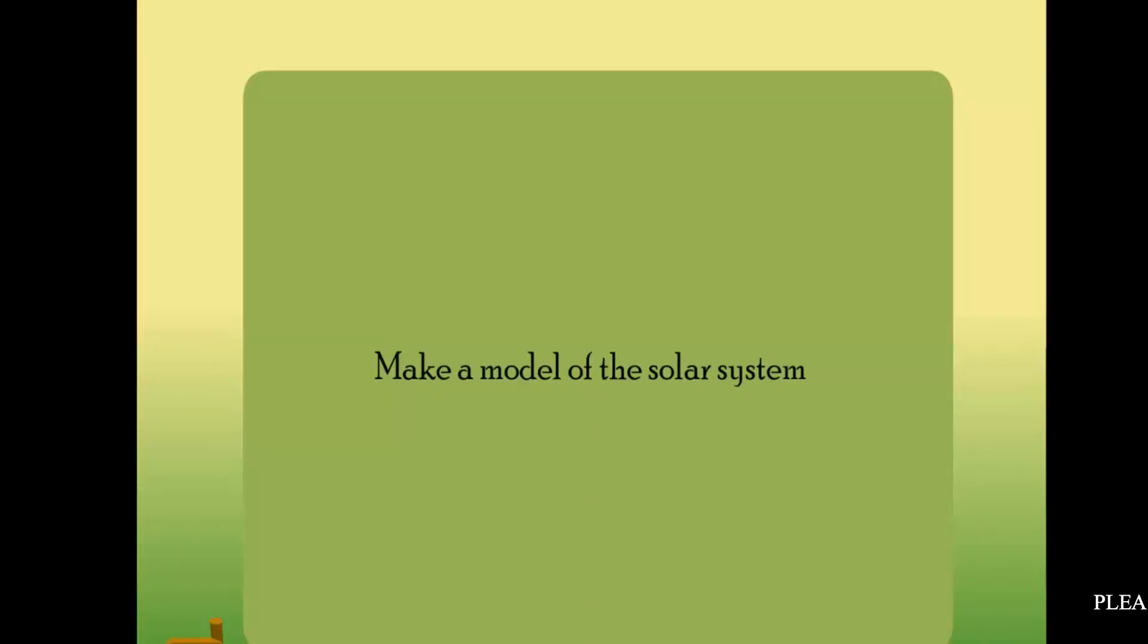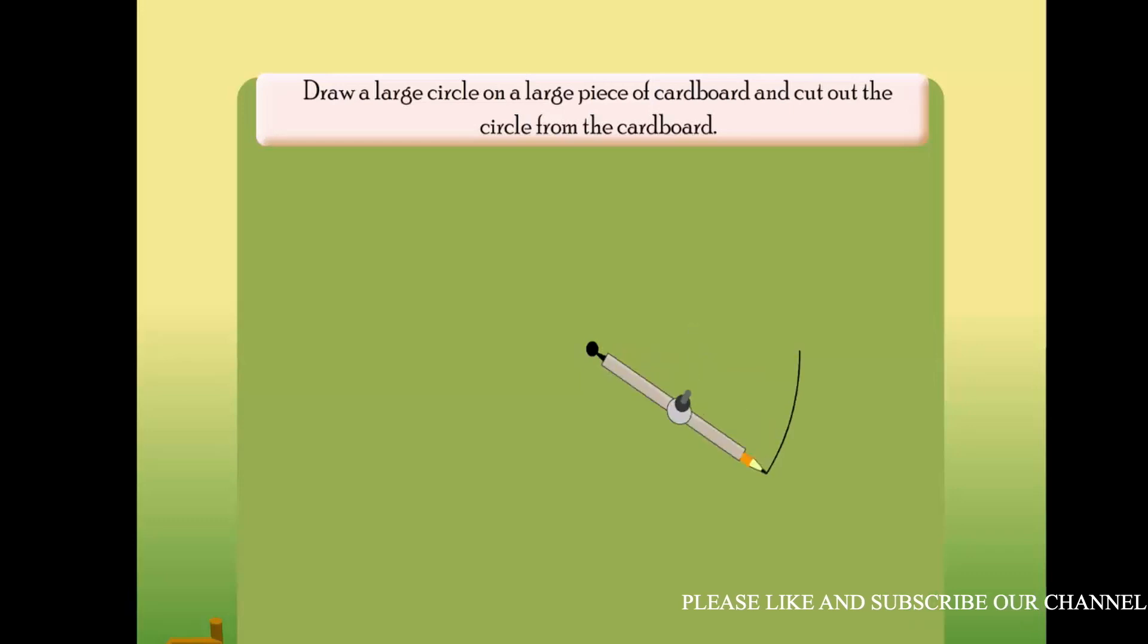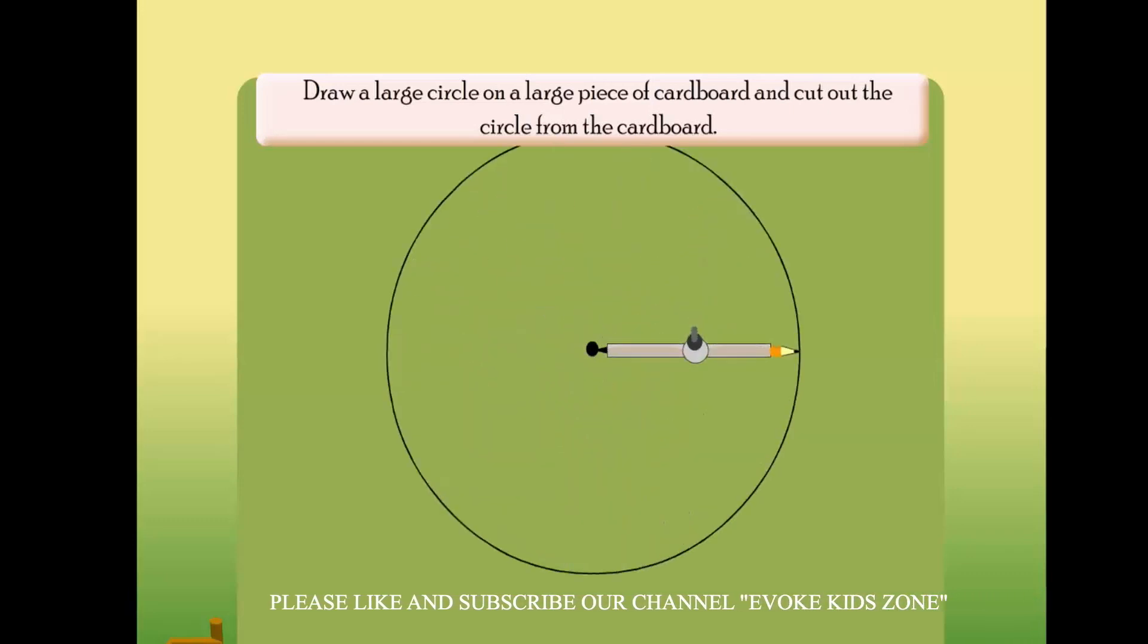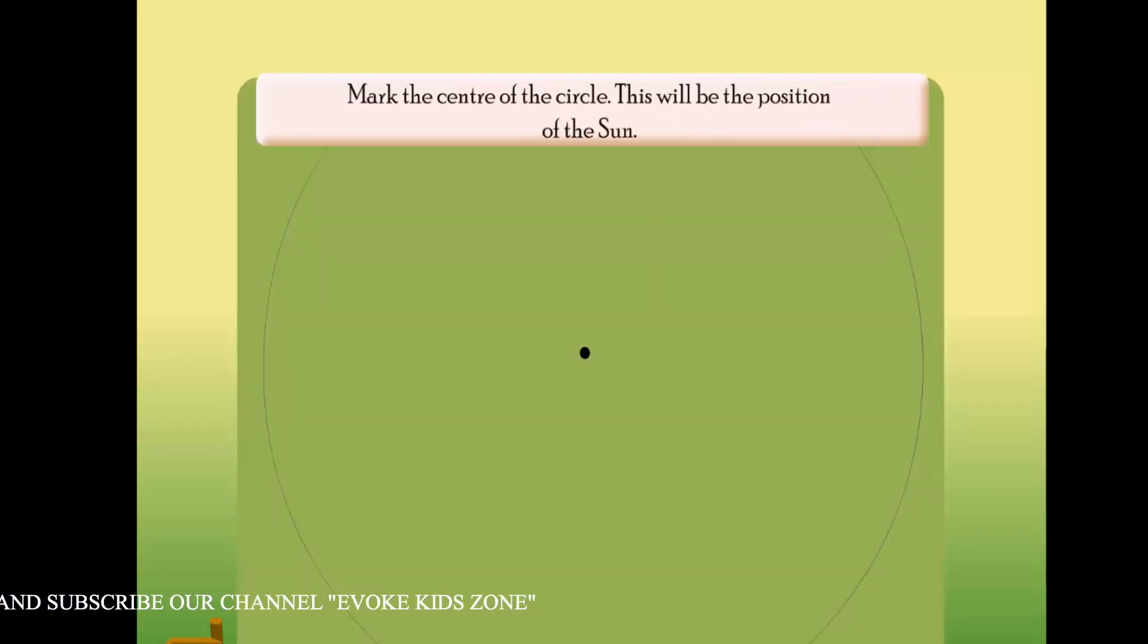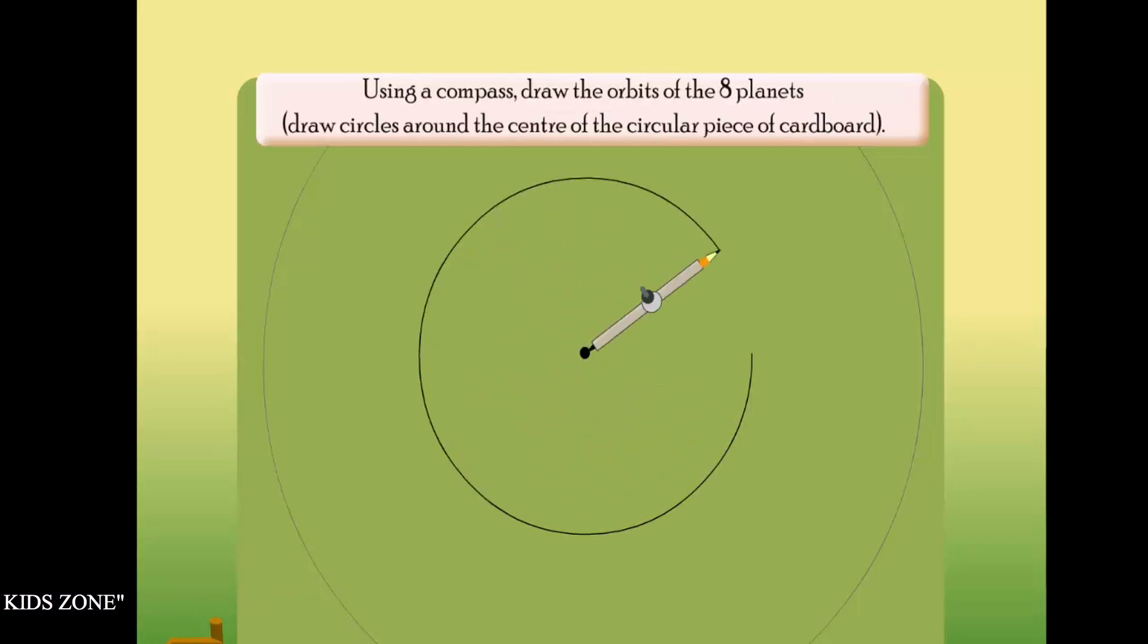Make a model of the solar system. Draw a large circle on a large piece of cardboard and cut out the circle from the cardboard. Mark the center of the circle; this will be the position of the Sun.